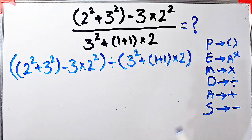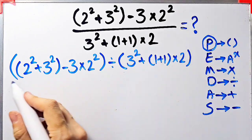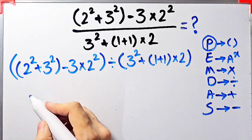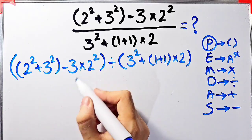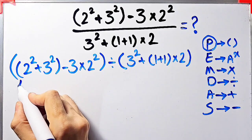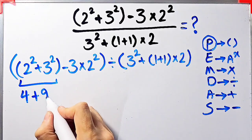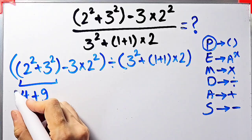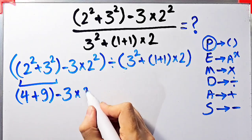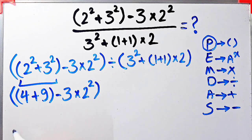According to the PEMDAS rule, first we simplify the parentheses. Inside the first parentheses we have exponent, addition, subtraction, and multiplication. First we simplify these parentheses: 2² = 4 and 3² = 9, so 4 + 9 equals 13. Now we have 13 − 3 × 2².